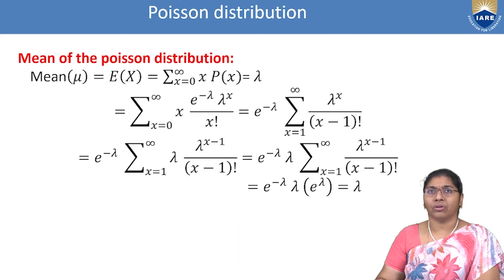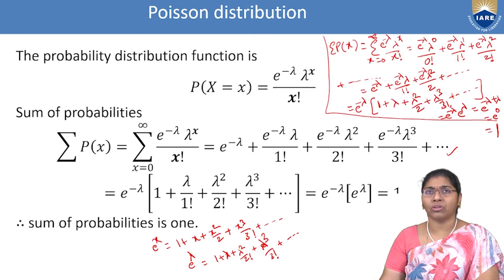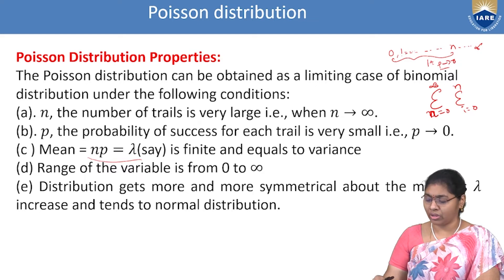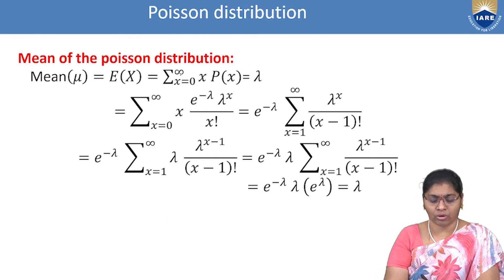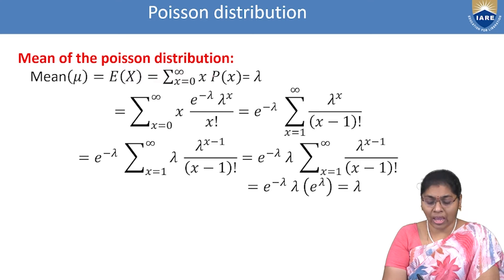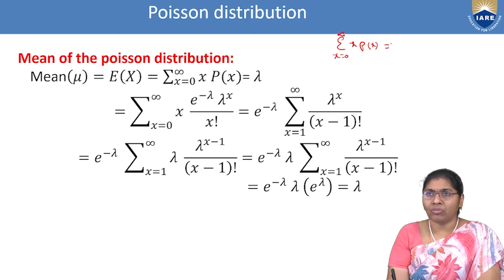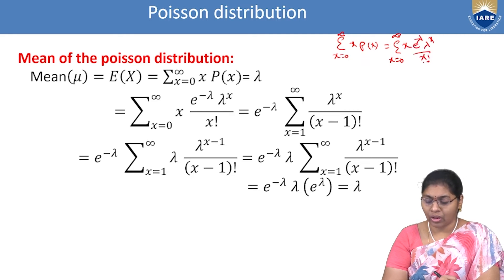Mean of the Poisson Distribution: mean = μ = E(X) = Σ(x=0 to ∞) x · P(x), where P(x) = e^(−λ) · λ^x / x!. Substituting and expanding the terms from x = 0 to infinity.